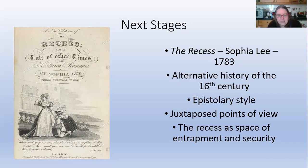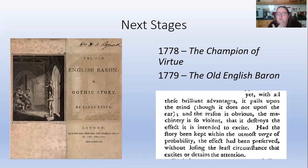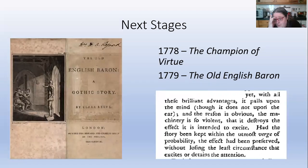The Recess introduces the trope of the enclosed space as both entrapment and security for female characters, which will become a key motif in later Gothic. Then there's The Old English Baron, originally published as A Champion of Virtue, changed to The Old English Baron in 1779. It was a self-conscious interaction with Walpole, seeking to correct the excesses of The Castle of Otranto — 'the machinery is so violent that it destroys the effect it's intended to create.' Clara Reeve complained about the excessive use of the supernatural.